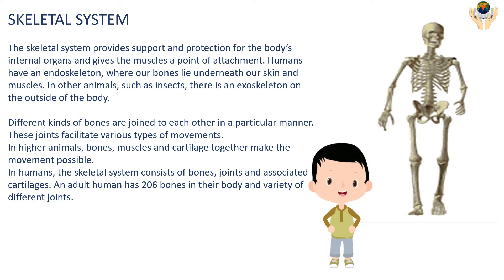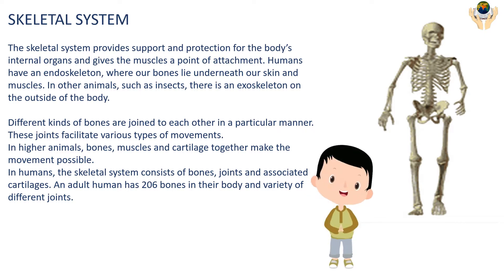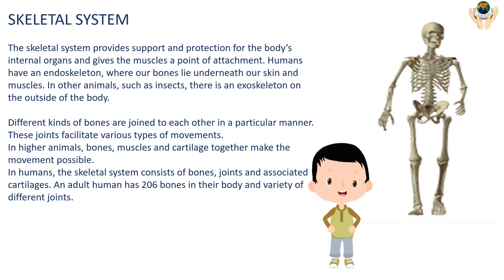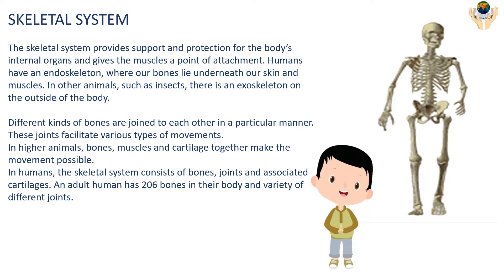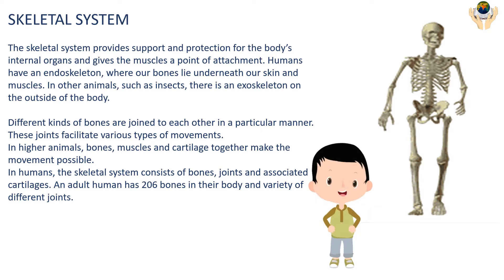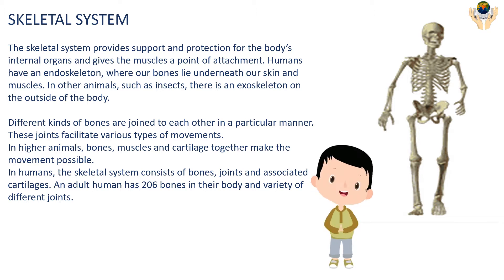The skeletal system provides support and protection for the body's internal organs and gives the muscles a point of attachment. Humans have an endoskeleton where our bones lie underneath our skin and muscles. In other animals such as insects, there is an exoskeleton on the outside of the body. Different kinds of bones are joined to each other in a particular manner, and these joints facilitate various types of movement. In higher animals, bones, muscles, and cartilage together make movement possible. In humans, the skeletal system consists of bones, joints, and associated cartilages.